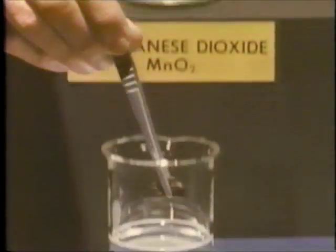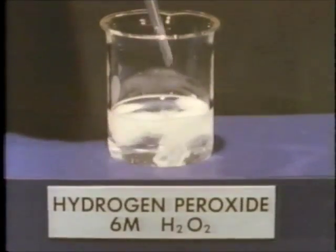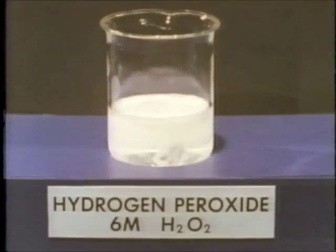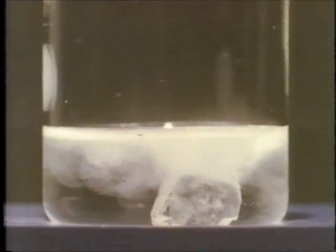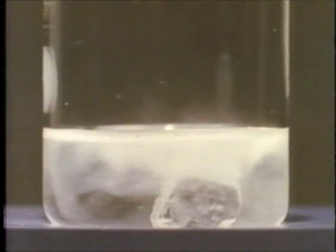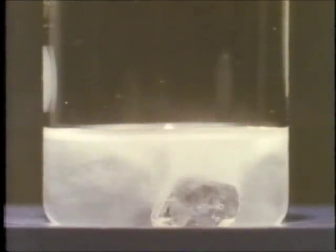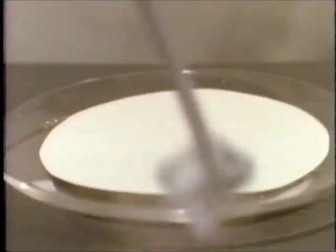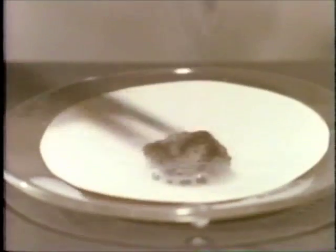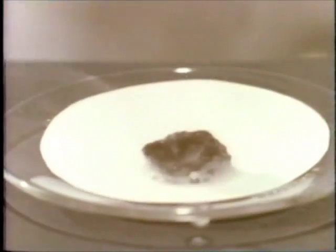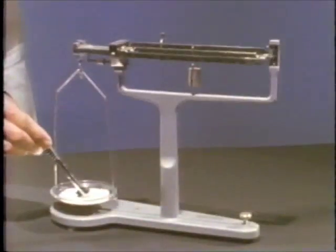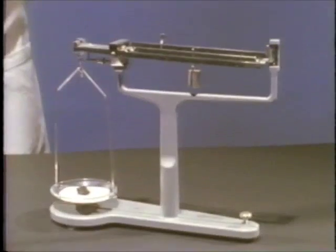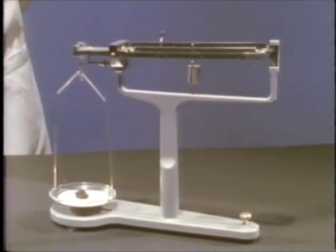Adding manganese oxide to hydrogen peroxide produces another rapid reaction. But unlike copper or sodium, the manganese oxide does not diminish in size. At least we cannot see any change. But let us check more closely to see if the solid is consumed in the reaction.